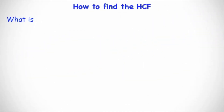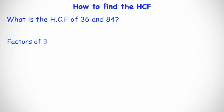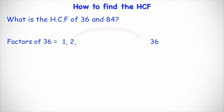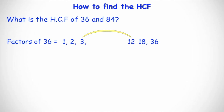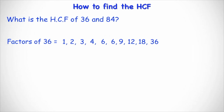Let's take a look at one more example. What is the highest common factor of 36 and 84? First, list all the factors of 36. We have 1 and 36 itself. Can 2 go into 36? Yes — 36 divided by 2 is 18. Can 3 go into 36? Yes — 36 divided by 3 is 12. Can 4 go into 36? Yes — 36 divided by 4 is 9. Can 5 go into 36? Not exactly — ignore that. Can 6 go into 36? Yes — 6 times 6 is 36, or 36 divided by 6 gives 6. So that's the complete factor list for 36.